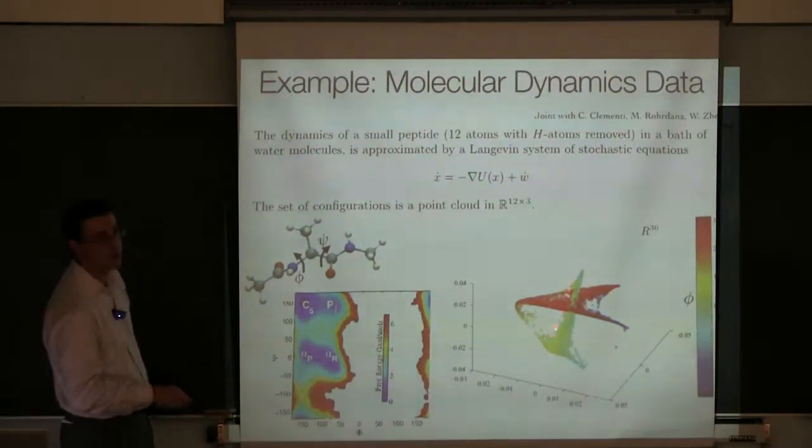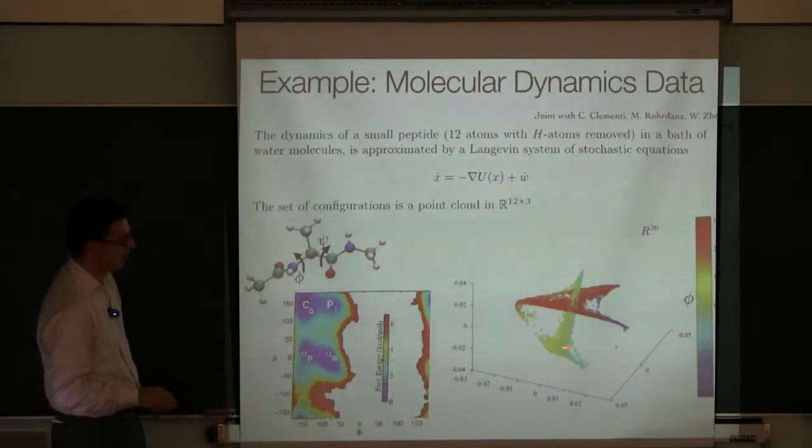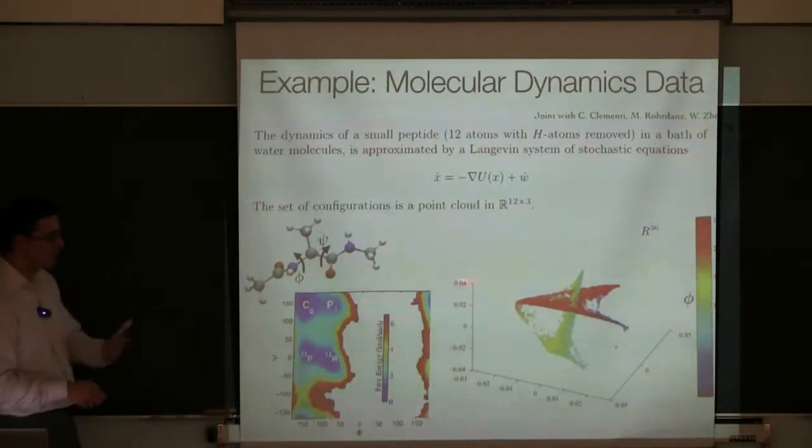This self-intersection is not real. If you go to 4D, that disappears. And so we have a representation of the effective state space of the molecule in terms of a very small number of variables.